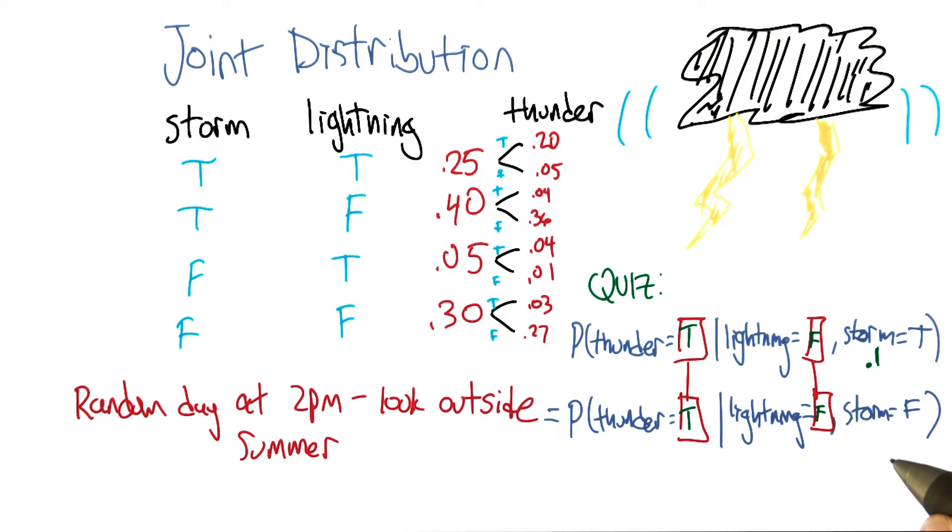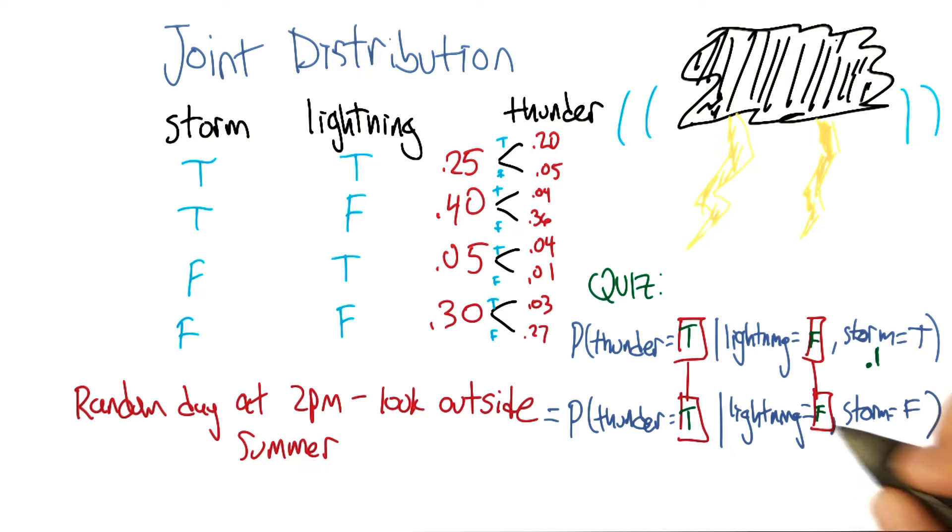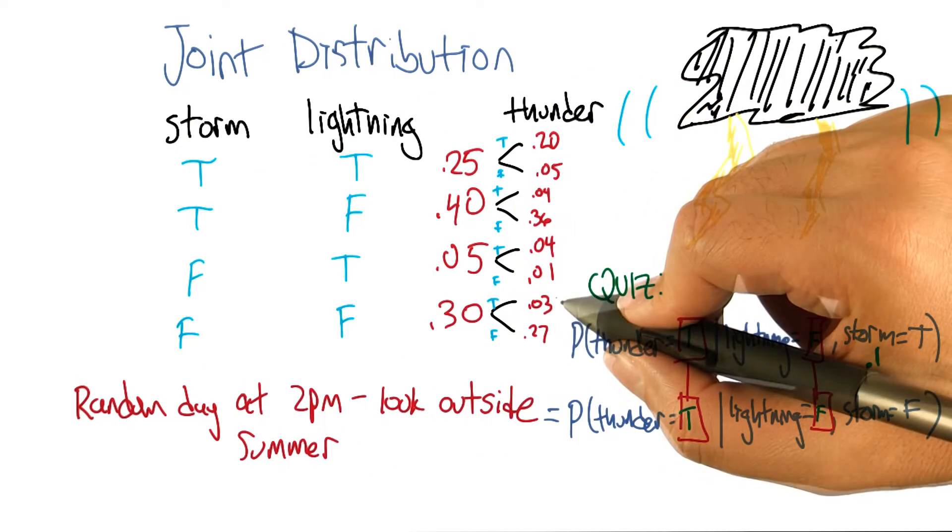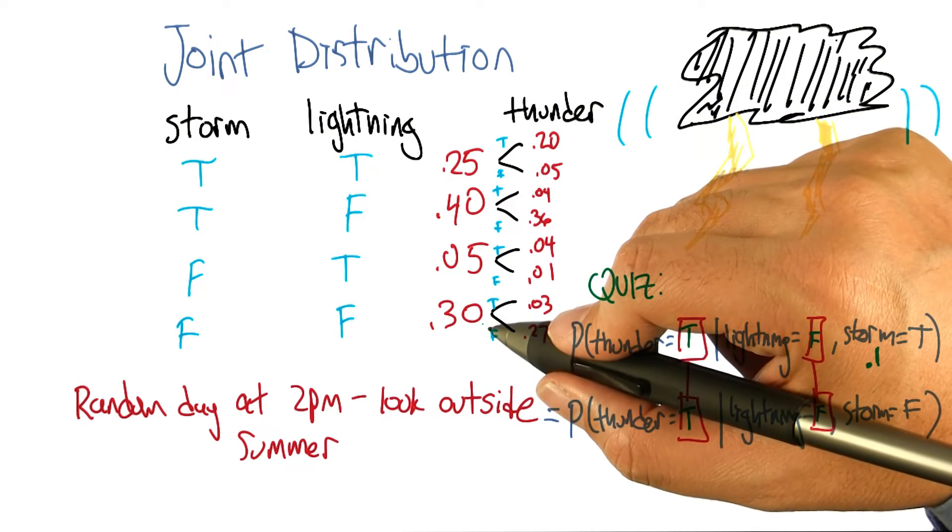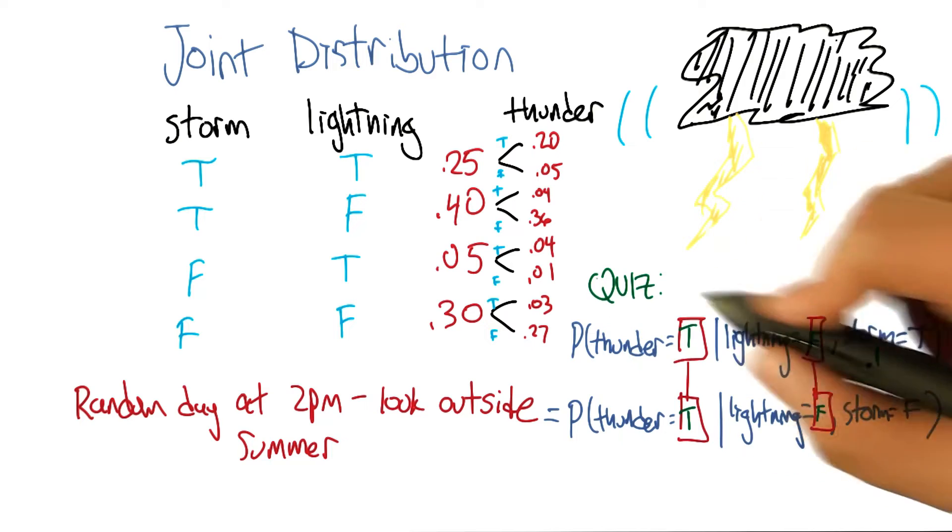Right, so maybe we'll get lucky and it'll work out the same with the other one. So where do we have to look for that one? Well, now we have to look in the row where lightning is false and storm is false. Okay, so it's down here. And look at the case where thunder is true, and that's 0.03. And it's 0.03 divided by 0.3, which is also 0.1. Woo-hoo! So that works as an answer.